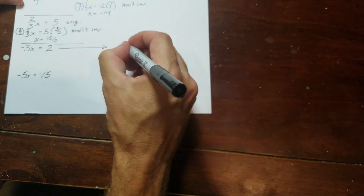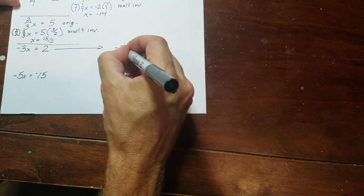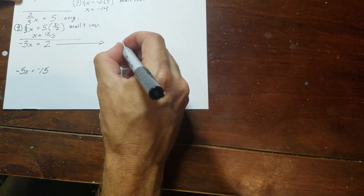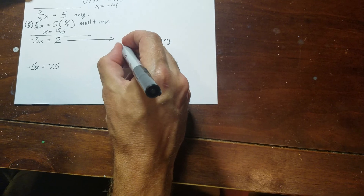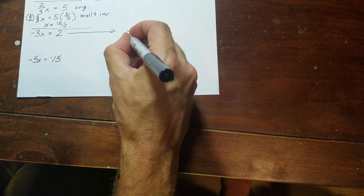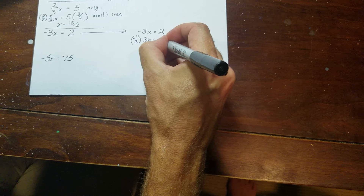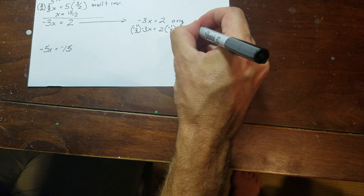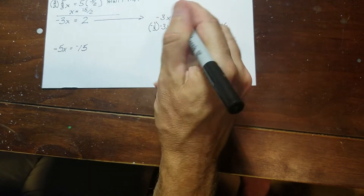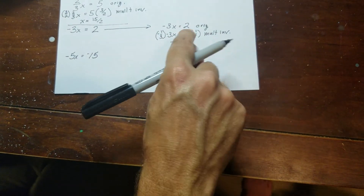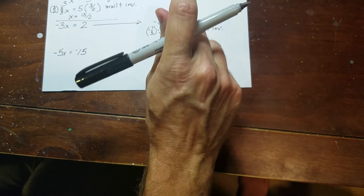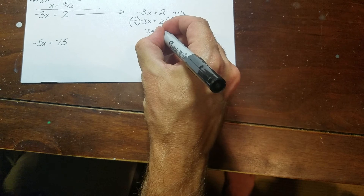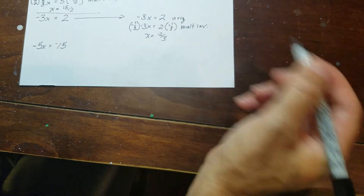Moving this problem over. The inverse of negative 3 is negative 1 third. Multiply both sides by negative 1 third. The left side becomes x. The right side: 2 over 1 times negative 1 third gives 2 times negative 1 over 1 times 3, which is negative 2 over 3.